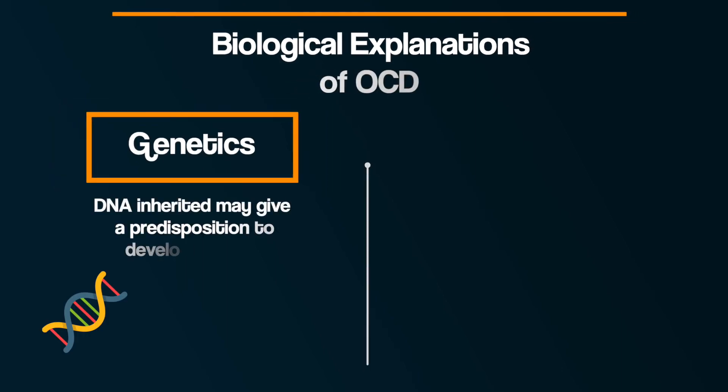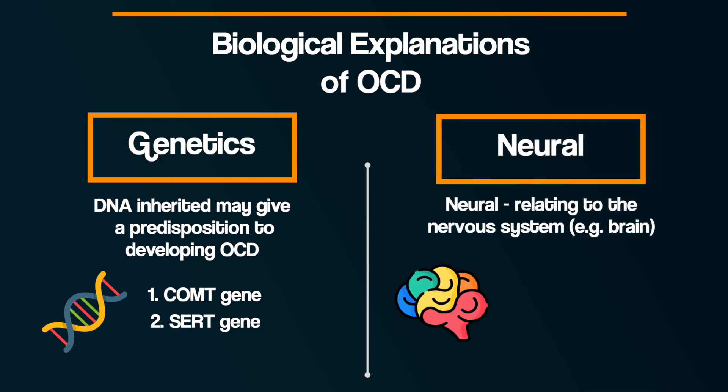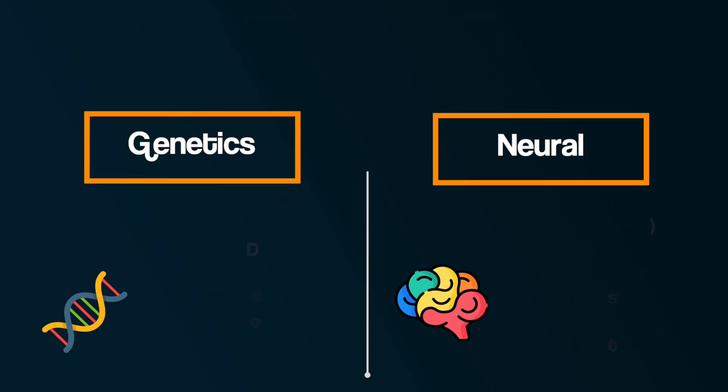So, now we've looked at two biological explanations: genetics, with the COMT and SERT genes, and neural explanations with the neurotransmitters dopamine and serotonin, and then the abnormal brain circuit involving the orbitofrontal cortex. Now, having outlined all of that, let's discuss this biological explanation for OCD in terms of its strengths and limitations.